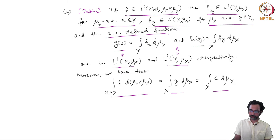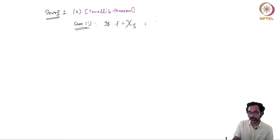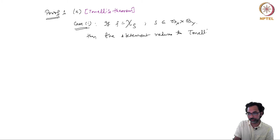Let us see the proof of Tonelli's theorem, which will imply Fubini's theorem as the second part. For the proof of Tonelli's theorem, we can divide it into a few cases. The first case is Tonelli's theorem for sets: when f is the indicator function of a set S belonging to Bx cross By, the statement reduces to Tonelli's theorem for sets, which we have seen in the last lecture. This takes care of the case when f is the indicator function of a measurable set.